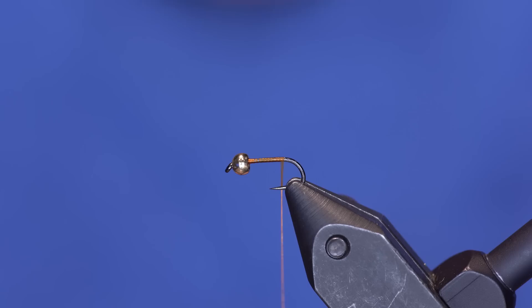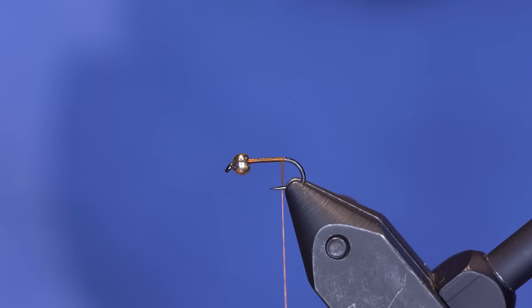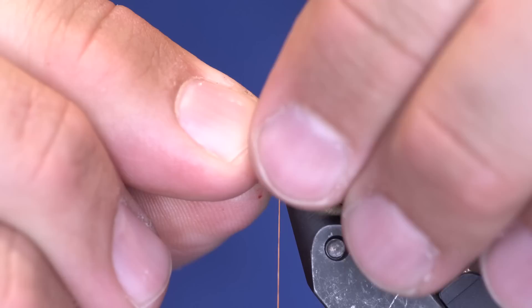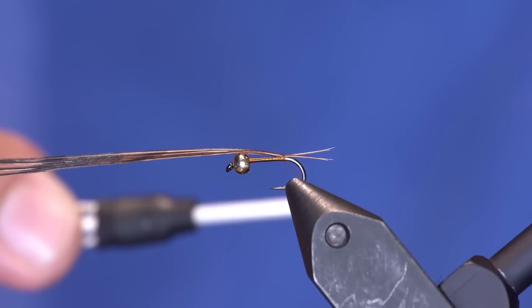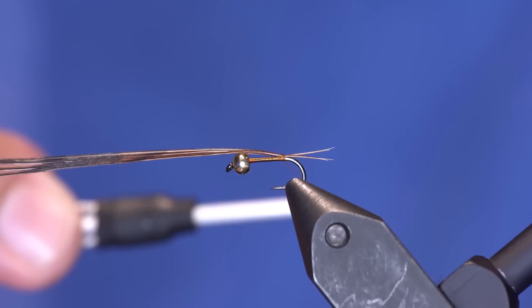All right, so just three or four fibers and we're gonna tie those fibers in roughly the same length as the shank of the hook, just like that. And now I've got it tied in with one wrap, maybe two, and now I'm gonna lift that up and bring my thread forward.